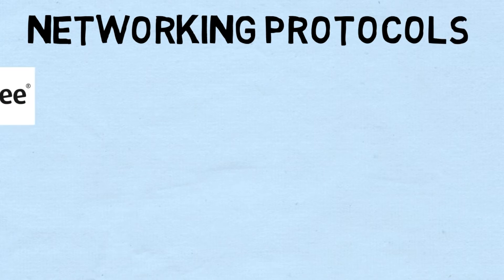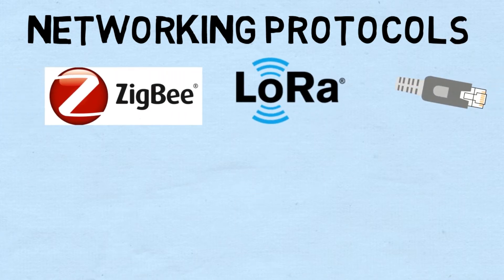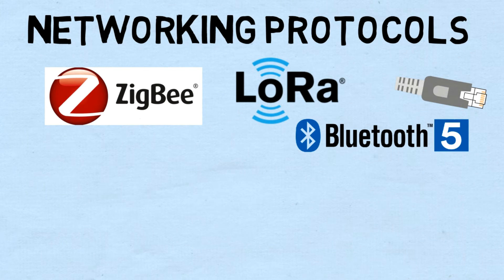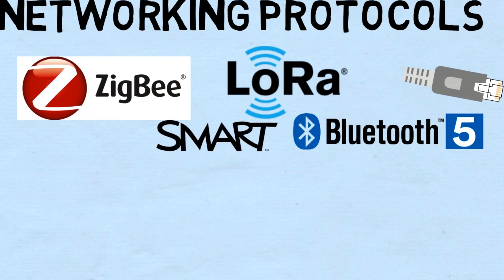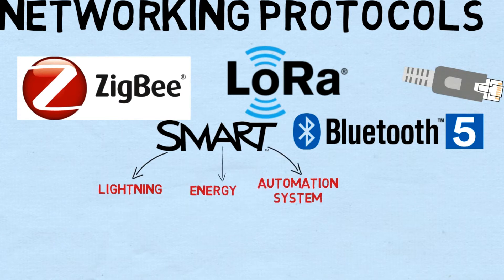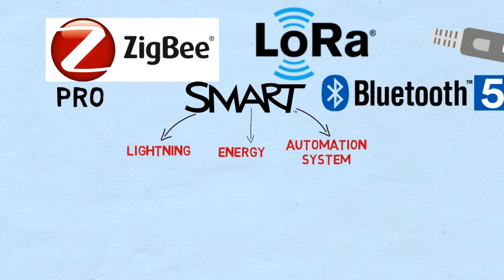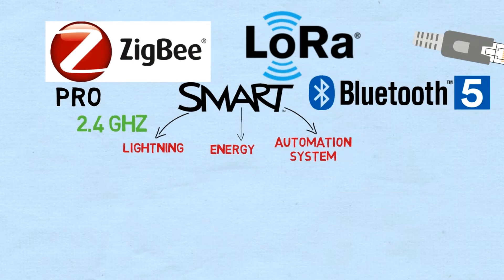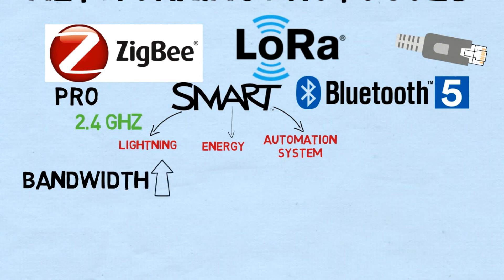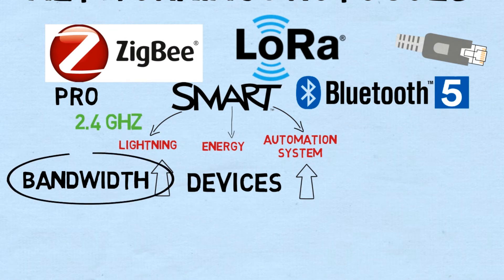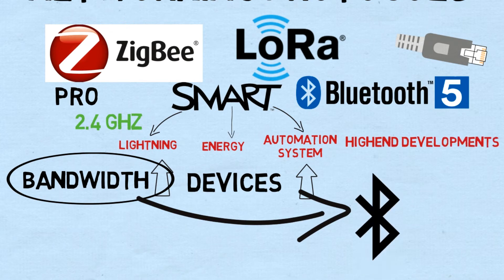IoT has smart networking protocols. ZigBee, LoRaWAN, Ethernet protocol, and Bluetooth 5.0 are some of the smart networking protocols implemented in smart lighting, smart energy, and smart automation systems. ZigBee Pro network can support up to the 2.4 GHz band for IoT. As bandwidth increases, more devices can be connected to each other. Due to increasing bandwidth of networking protocols, wireless technologies are making way for high-end developments using Bluetooth and Li-Fi technologies.